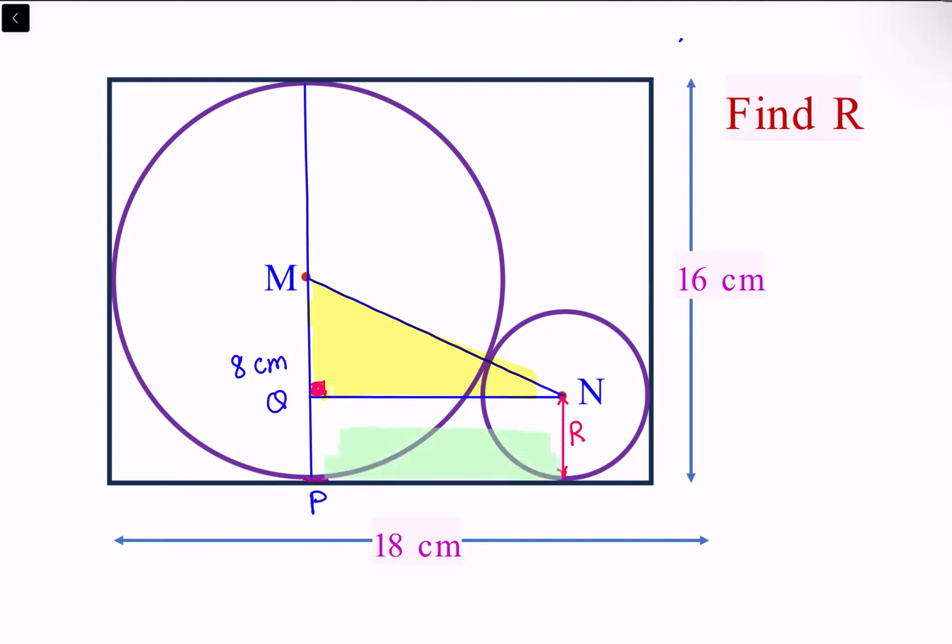In this figure, one angle is 90 degrees by construction, and the angle below is also 90 degrees because the radius is perpendicular to the tangent. All angles are 90 degrees, so it's a rectangle. Since rectangle sides are equal, the opposite side is also R, and MQ is 8 minus R.